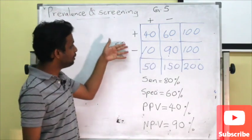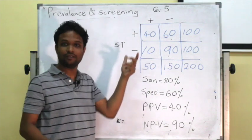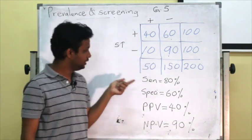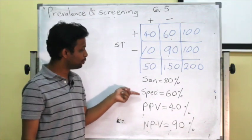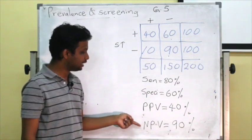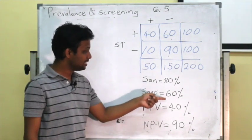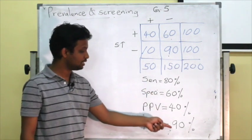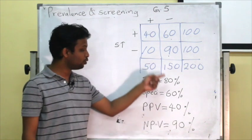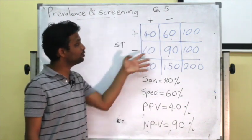I hope that you remember this two-by-two table that we discussed in the previous lecture. In the previous lecture, we calculated the sensitivity, specificity, positive predictive value, and negative predictive value as 80%, 60%, 40%, and 90%. We calculated all these values based on this two-by-two table.